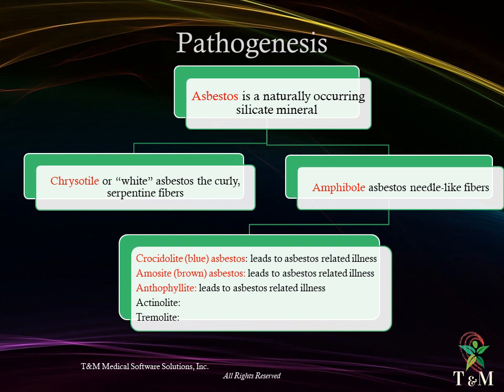Pathogenesis: asbestos is a naturally occurring silicate mineral and there are two main types — chrysotile, or white asbestos, the curly serpentine fibers, and amphibole asbestos, needle-like fibers. This is further divided into other types including crocidolite or blue asbestos, amosite or brown asbestos, and anthophyllite, all of which are responsible for asbestos-related illness. Other types include actinolite and tremolite.